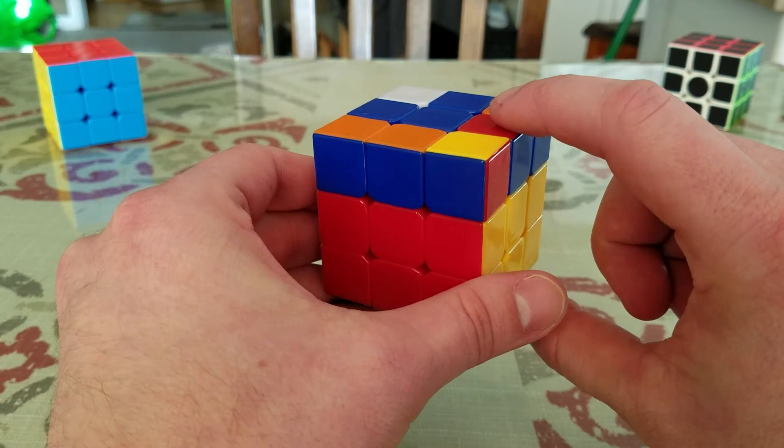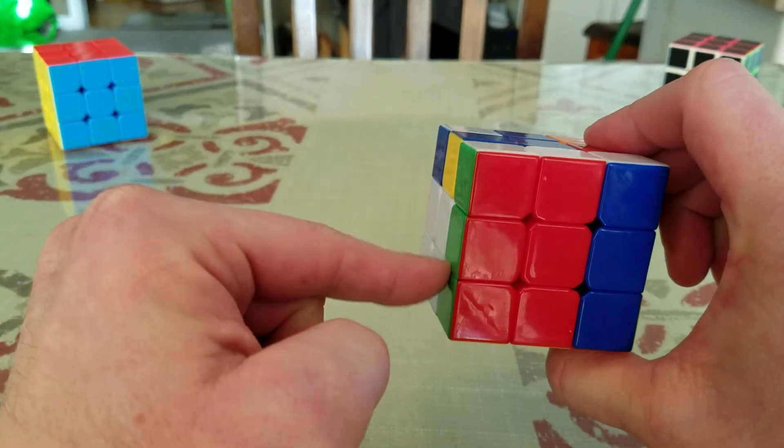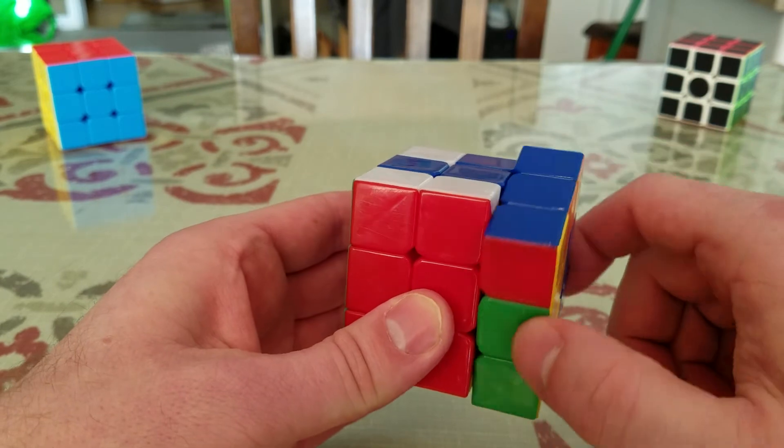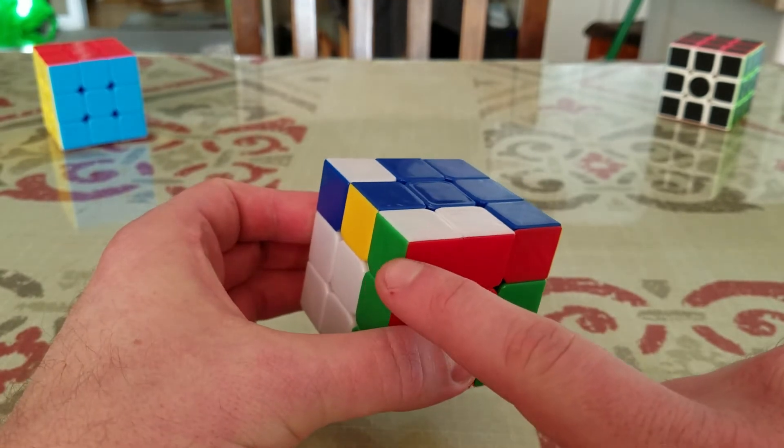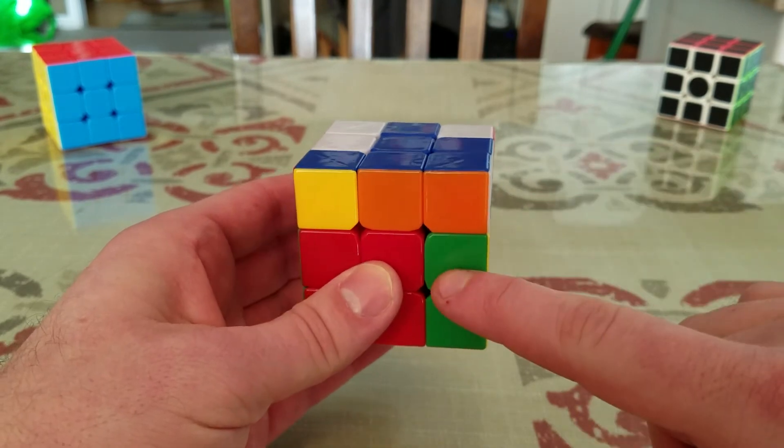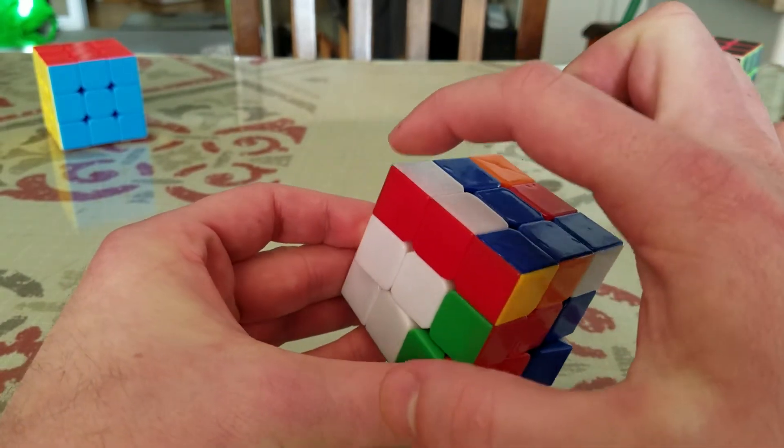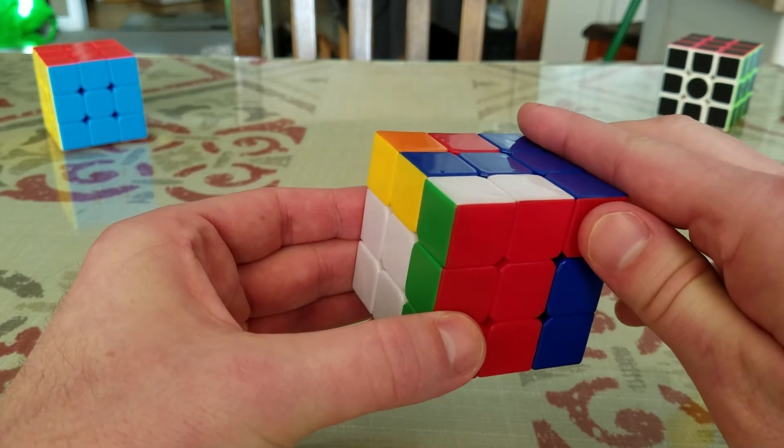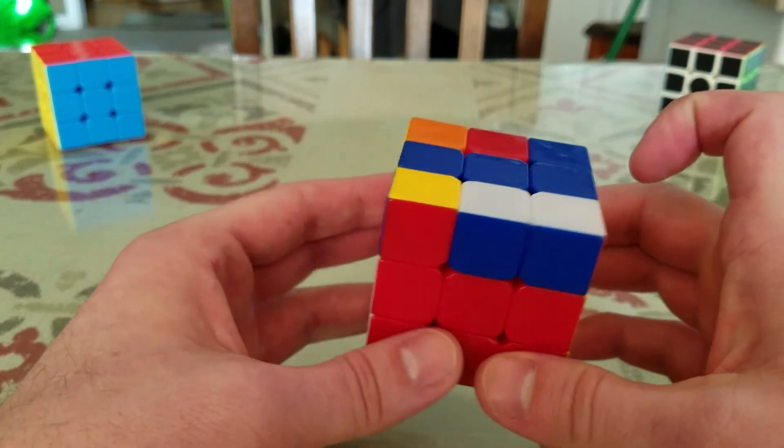This move is going to be moving the front down one to create a green bar over here on the right. Then we're going to turn this right side up to create a green bar of two right here. We're going to break this green bar by turning the top one. We're going to put this green bar back on the bottom. We have a green corner back here when we broke the green bar. We're going to match it back up with the green bar to create three and then put it back on the bottom. That's the end of this move.